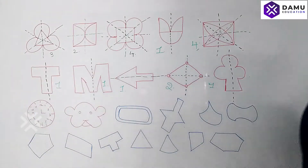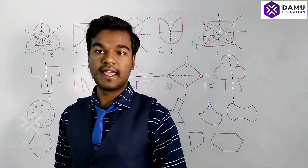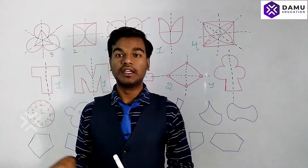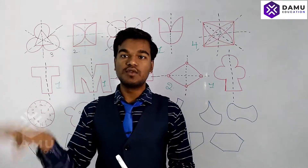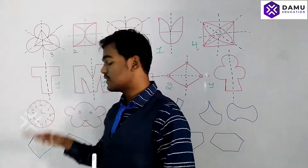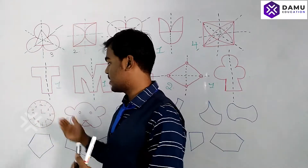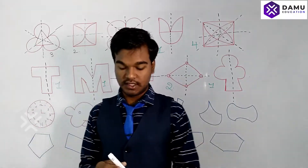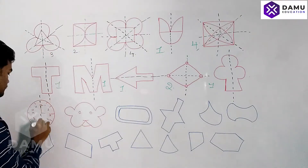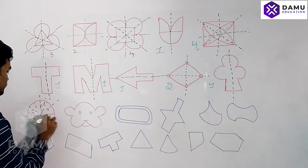For a clock, this is a somewhat different case. If you consider it without any numbers — just as a circle — then you can draw infinitely many lines of symmetry. But if you consider the numbers, folding won't always make the numbers coincide, so those folds are not lines of symmetry. If considered as only a circle, there are infinite lines of symmetry.